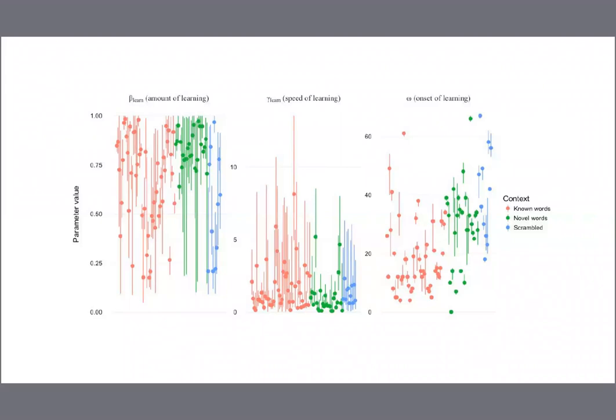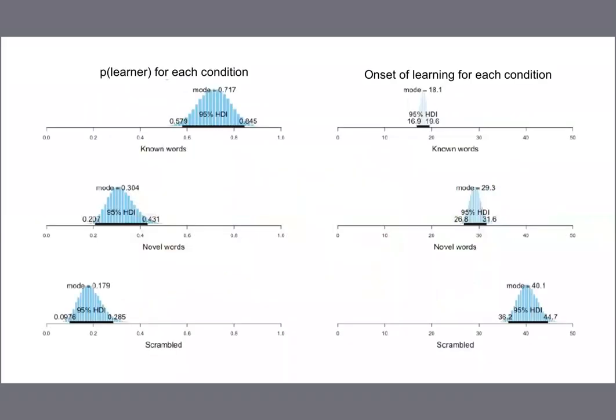This is important because it suggests that the learning process begins midway through the experiment, in contrast with some cognitive models that predict learning will start immediately and proceed gradually. Looking at the posterior of the group-level parameters, we can see this result very clearly. The probability that an individual in each of the three conditions would be classified as a learner shows that subjects in the known words condition are more likely to learn the patterns. The model estimates that subjects in the scrambled condition have only a 10 to 28 percent chance of learning the structure at all — and remember that subjects in all three conditions see the exact same N-I-W pattern. This indicates that the context the pattern appears in matters quite a lot. Subjects in the known words condition learn the pattern relatively quickly, while subjects in the scrambled words condition took the longest, if they learned the pattern at all.